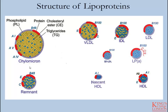Here you see chylomicron and chylomicron remnants. They are distinguished primarily by the fact that they have an ApoB48 apolipoprotein — this is the main defining characteristic for a chylomicron. You can see that the chylomicron and its remnant do differ in that the chylomicron contains several A apolipoproteins, while the remnant contains ApoE and ApoC.